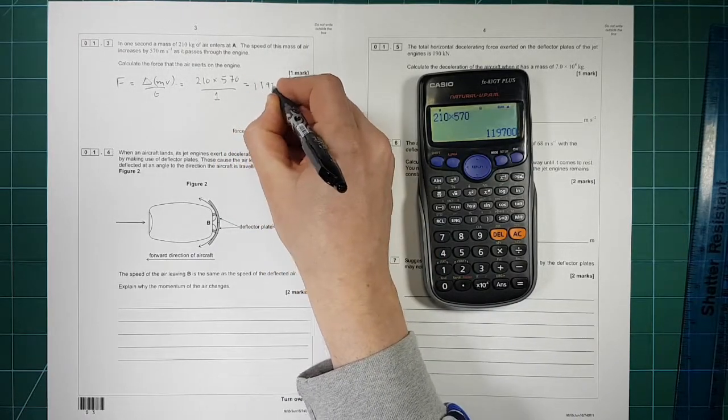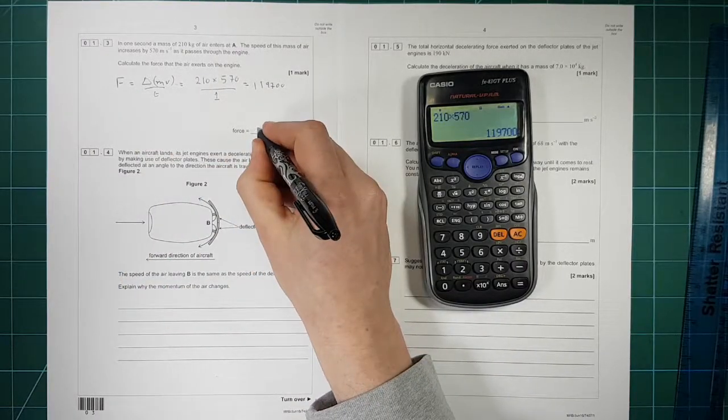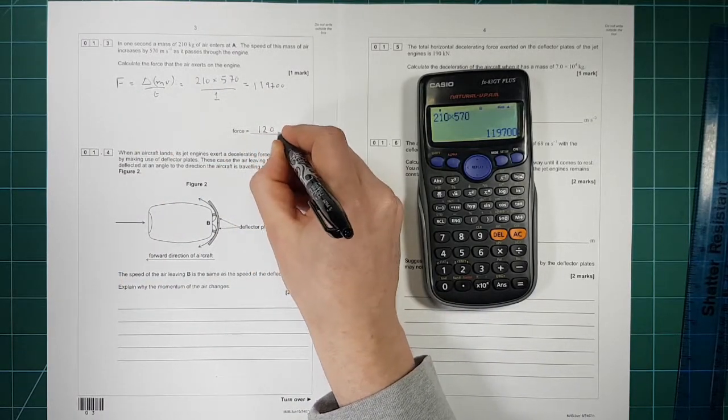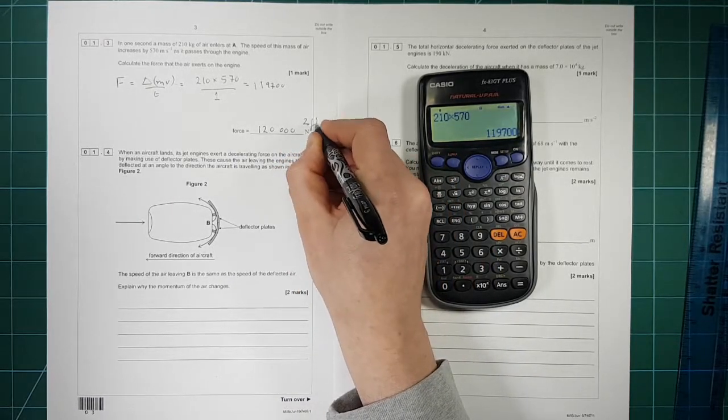210 times by 570 gives you that number there. That's 119,700. Two sig figs, two sig figs. That's right. Our answer is two sig figs. 120,000 newtons to 2 S.F.